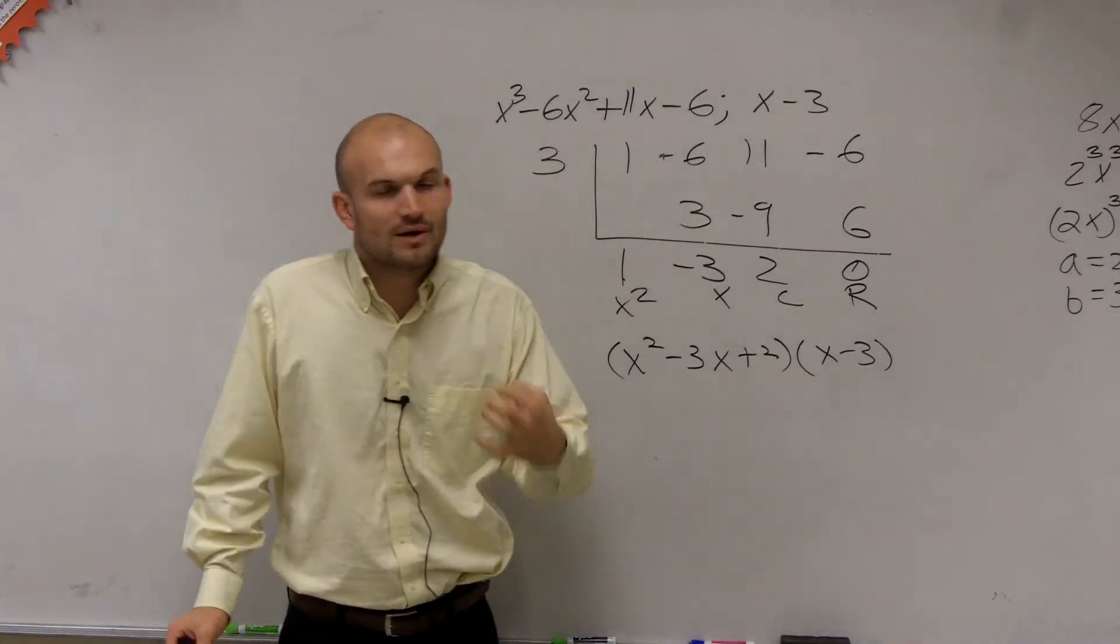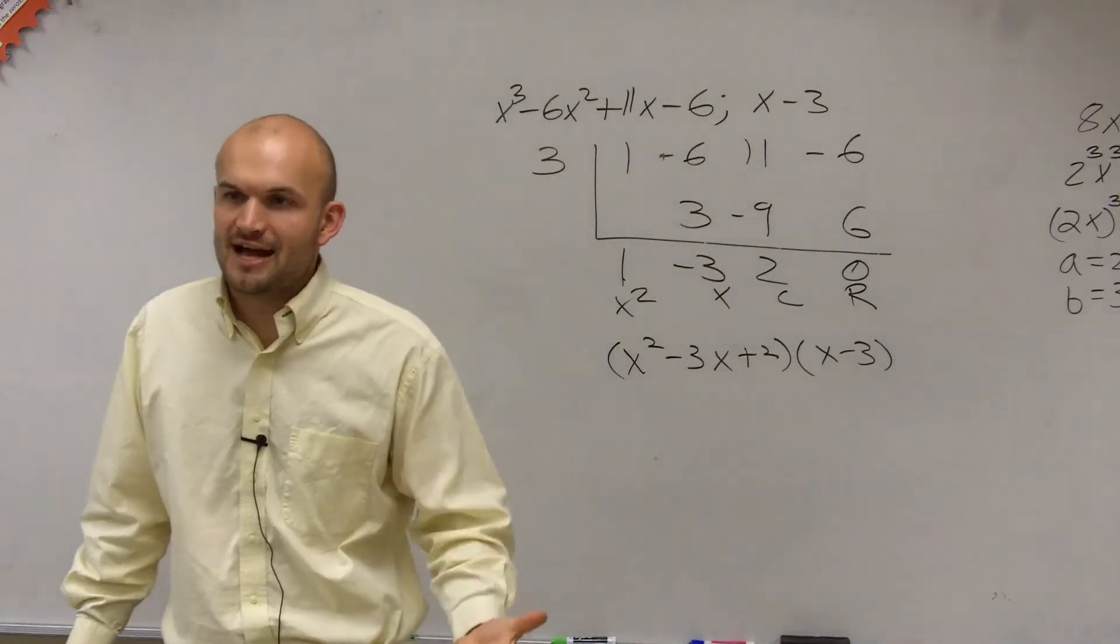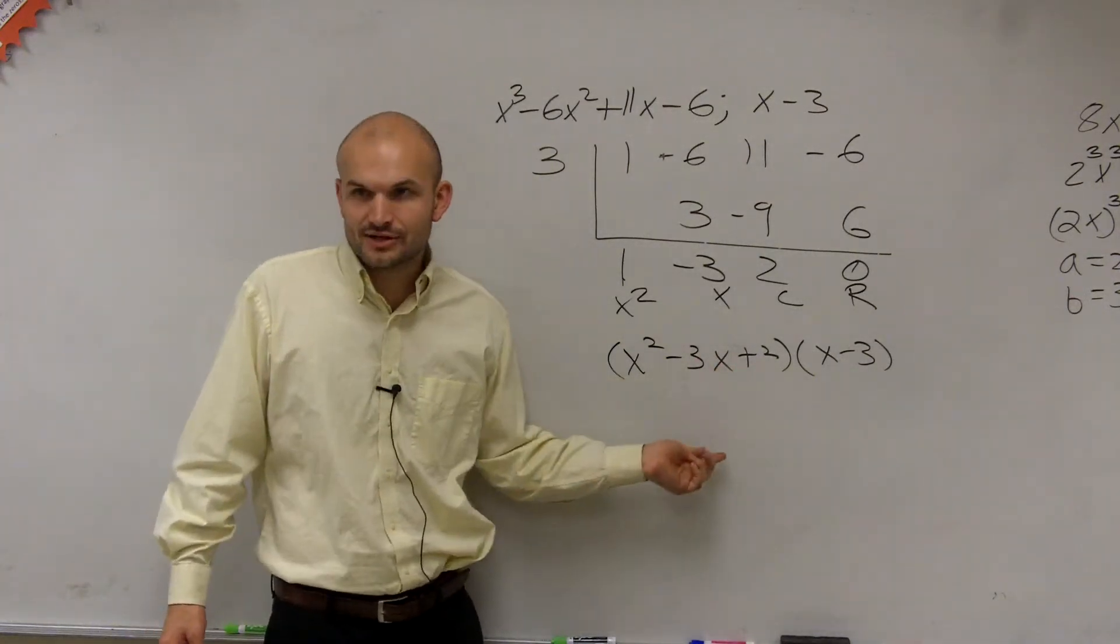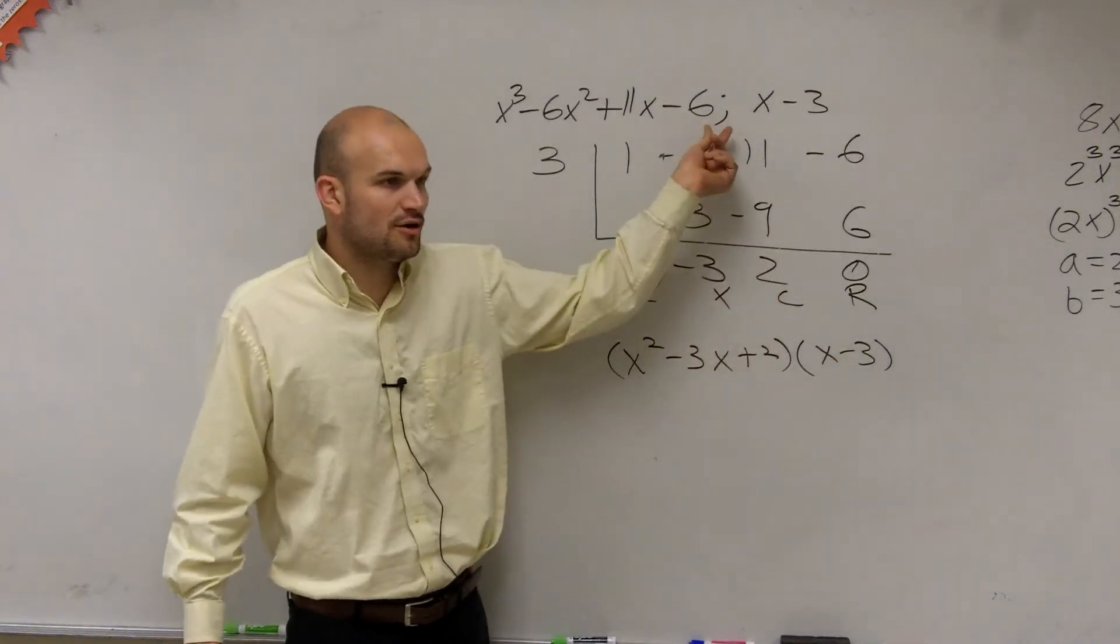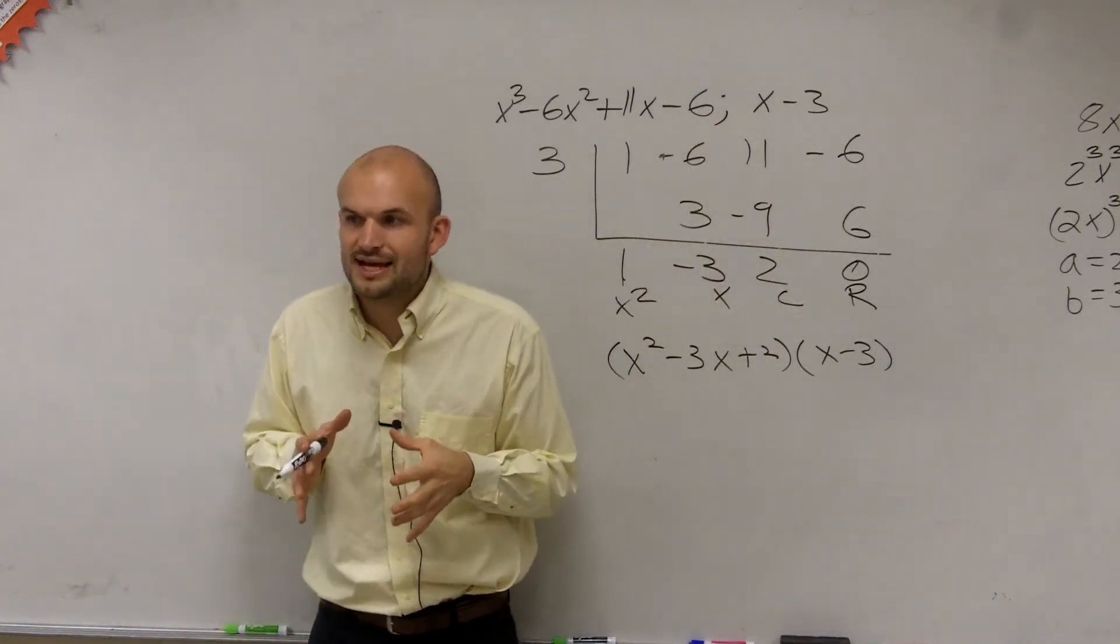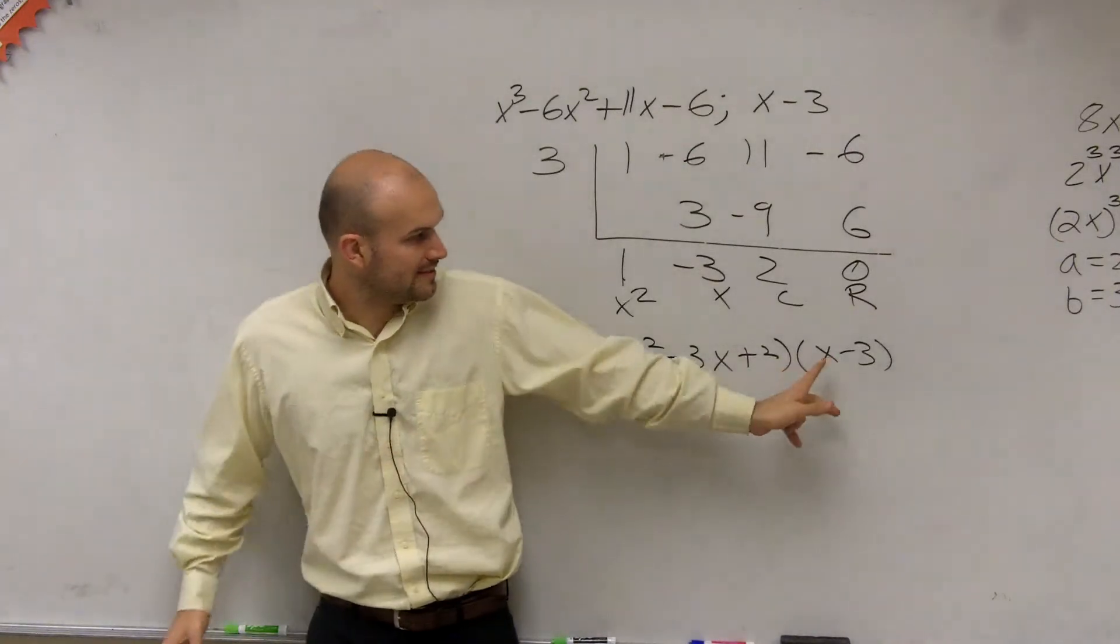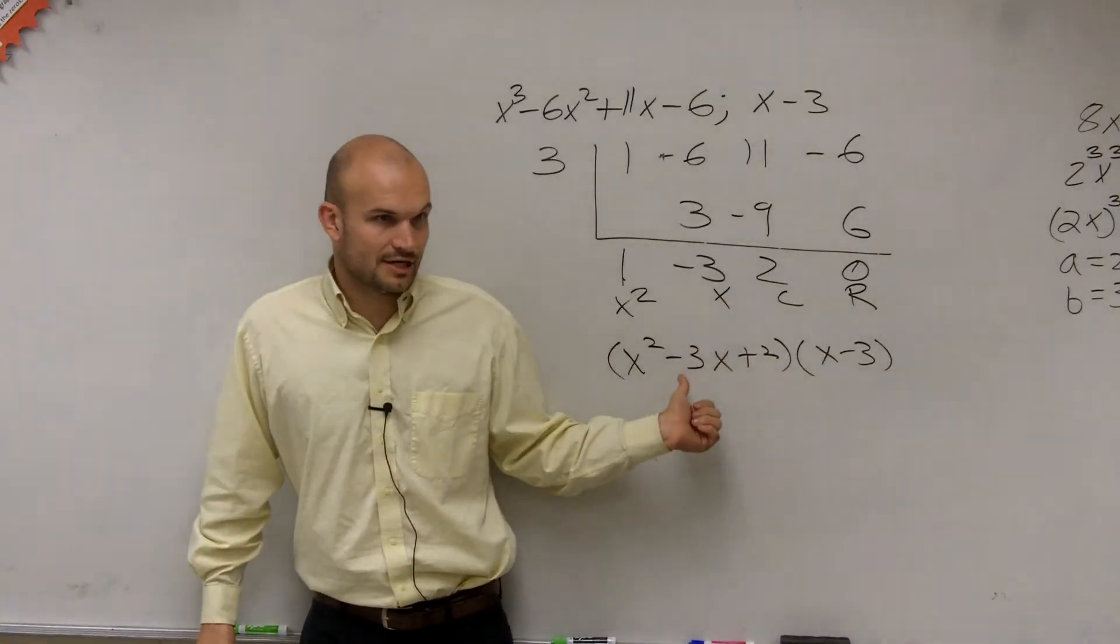But that's not what the question is asking. The question is asking find all of the factors. And when you want to find all the factors, you can say that this is factored - this times this equals our polynomial. But what I want you guys to understand is we need to make sure we write them as linear factors. This is linear. This is not linear.